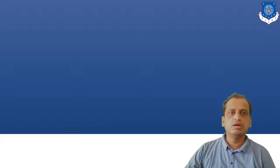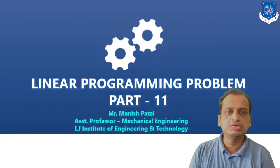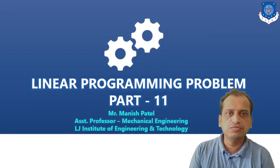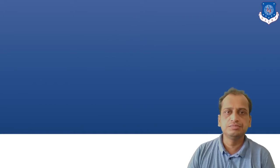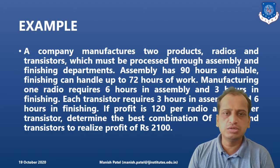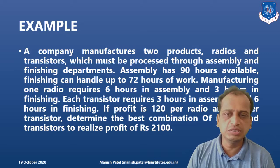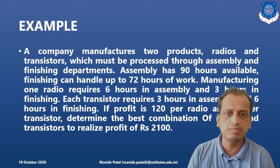Hello friends, welcome to this online series of lectures on operations research. In this lecture we will solve an example based on goal programming. A company manufactures two products — radios and transistors — which must be processed through assembly and finishing departments.